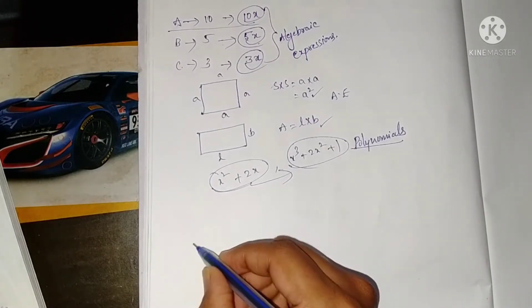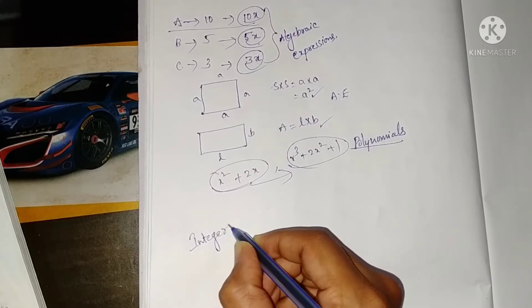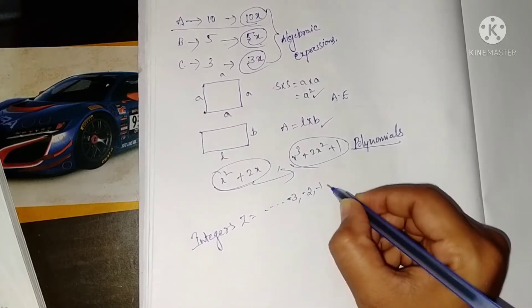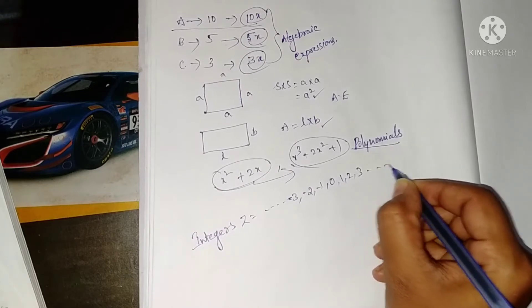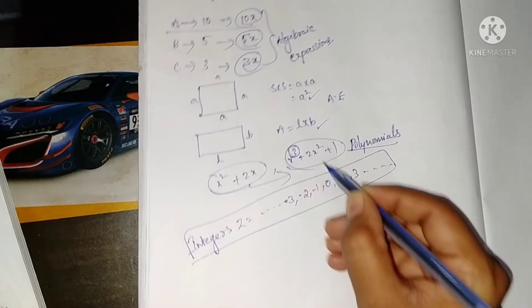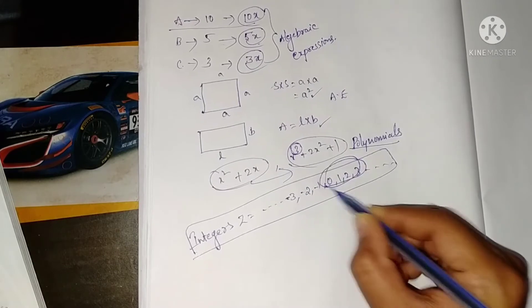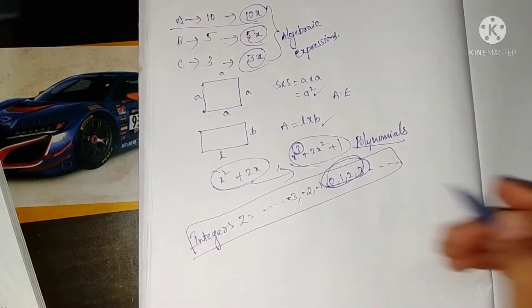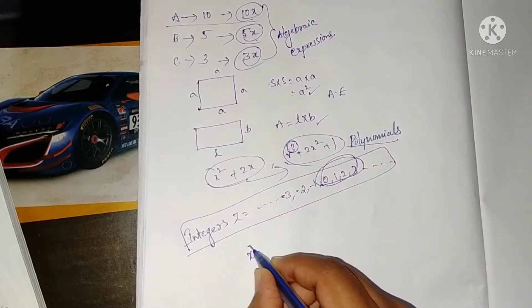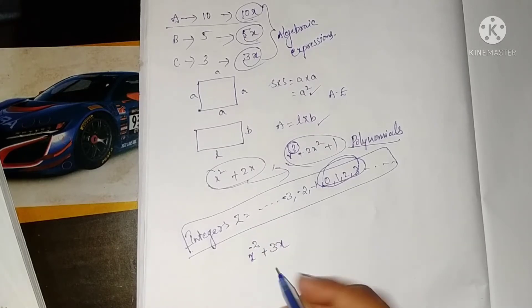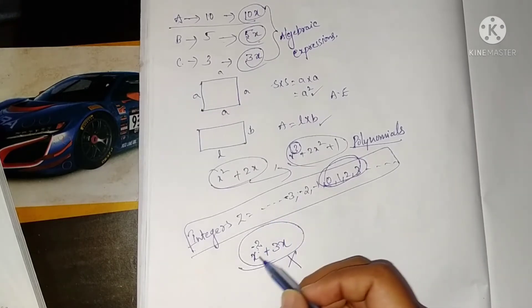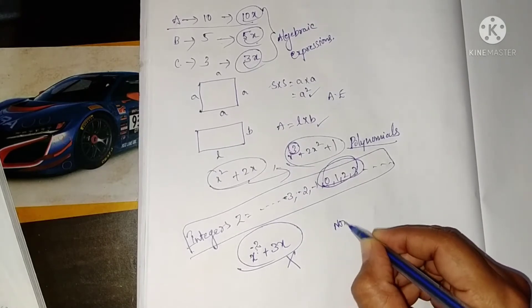What are integers? Integers include negative numbers and these — the power, that is the exponent, should be non-negative integers: 0, 1, 2, 3, 4, 5, 6, and so on — zero or positive numbers. For example, x⁻² + 3x is not a polynomial because the exponent is a negative integer; the power must be a non-negative integer.